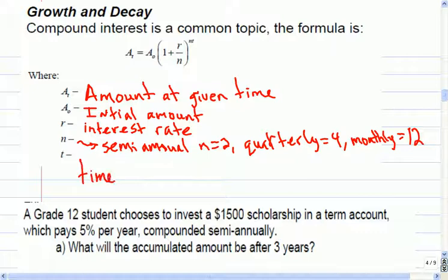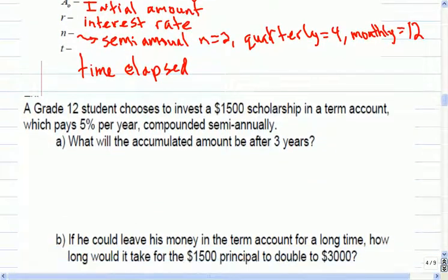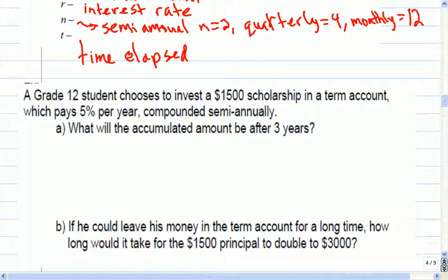T is the time elapsed. A grade 12 student chooses to invest a $1,500 scholarship in a term account which pays 5% per year, compounded semi-annually. What will be the accumulated amount after 3 years? That would be the initial amount of $1,500. The interest rate is 5%, and it says semi-annually, so that happens two times in the year. So that's my N, and it will be three years worth of compounding.